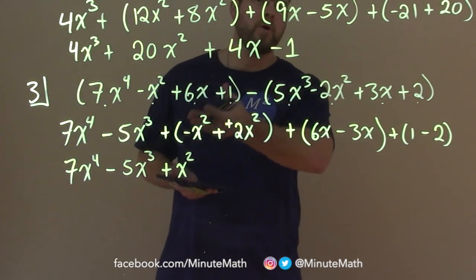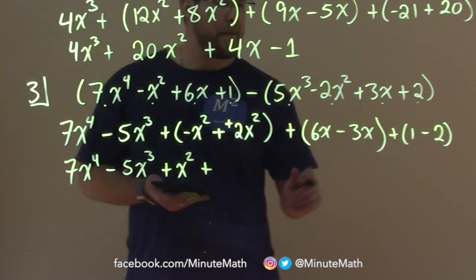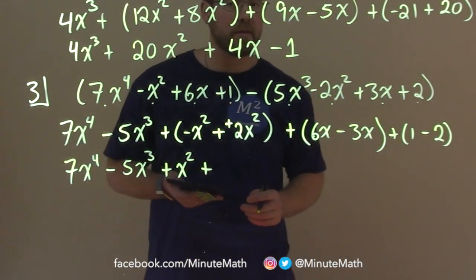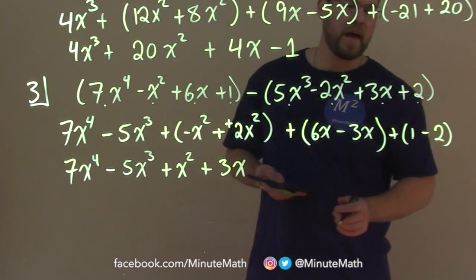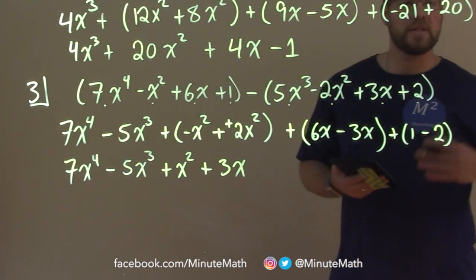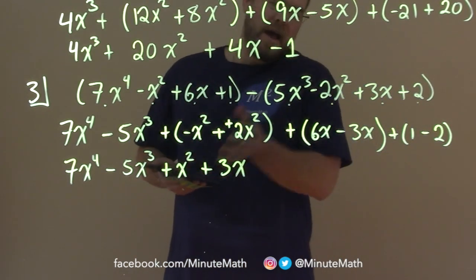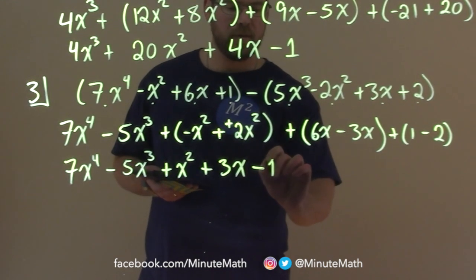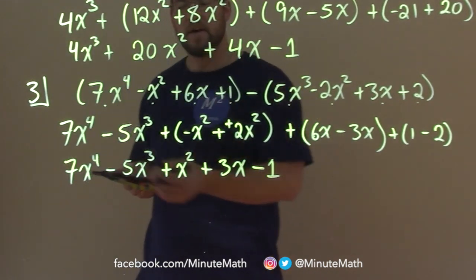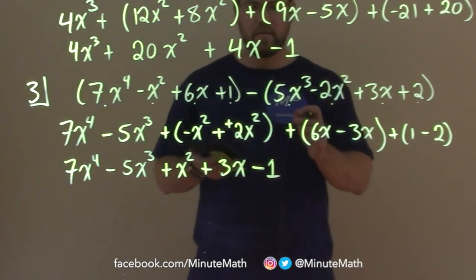And again, 6x minus 3x, 6 minus 3 is 3, so we just have a 3x here, combining our like terms. And lastly we have 1 minus 2, which is a negative 1. We add that, but add a negative 1, which is the same as subtracting a 1. So we subtract a 1 here. And we have our answer: 7x to the 4th minus 5x to the 3rd plus x squared plus 3x minus 1.